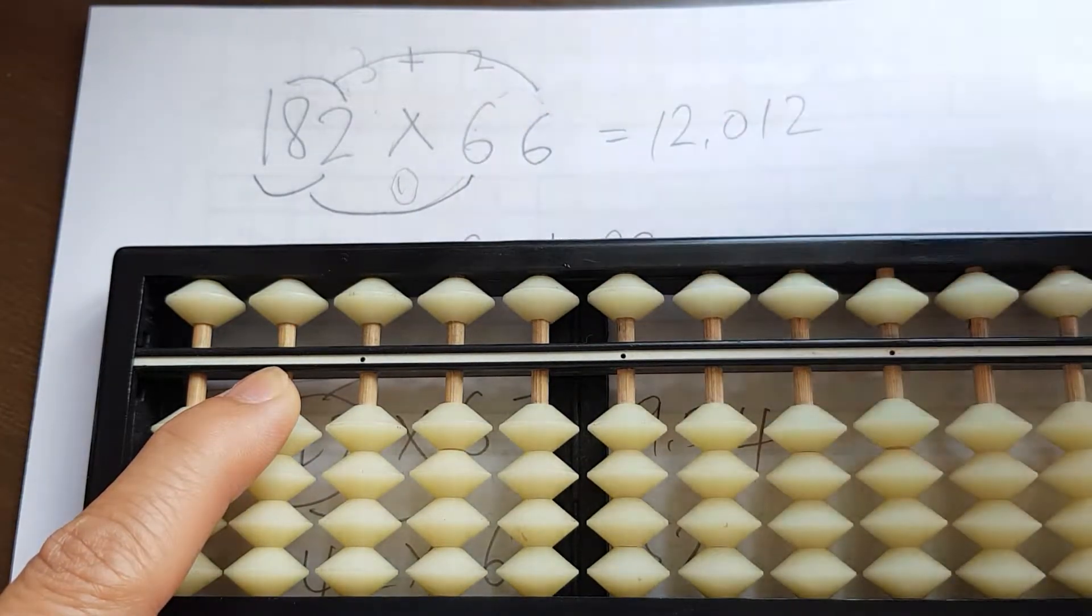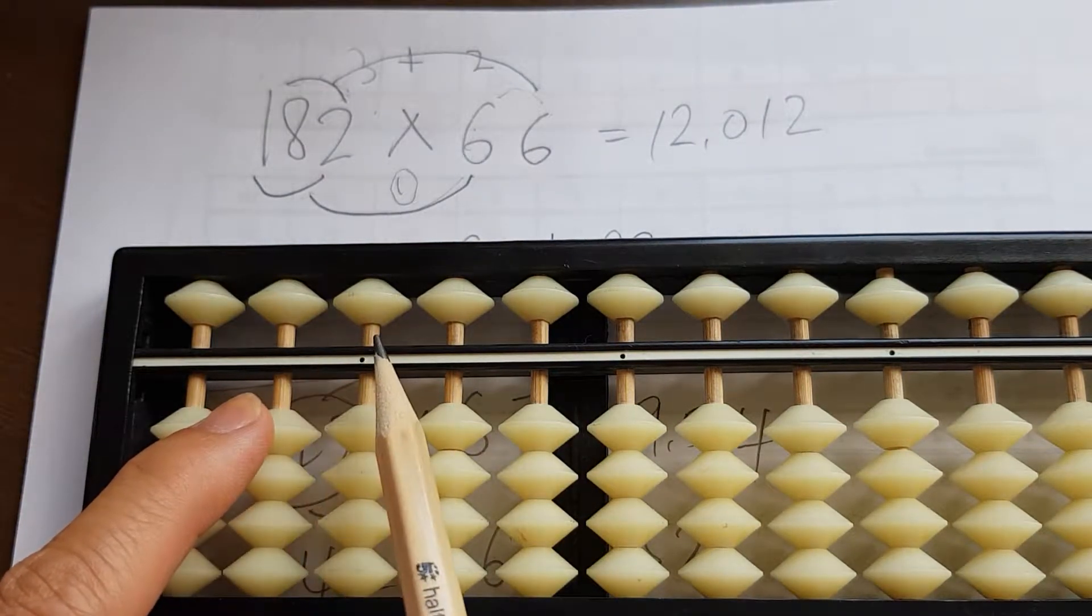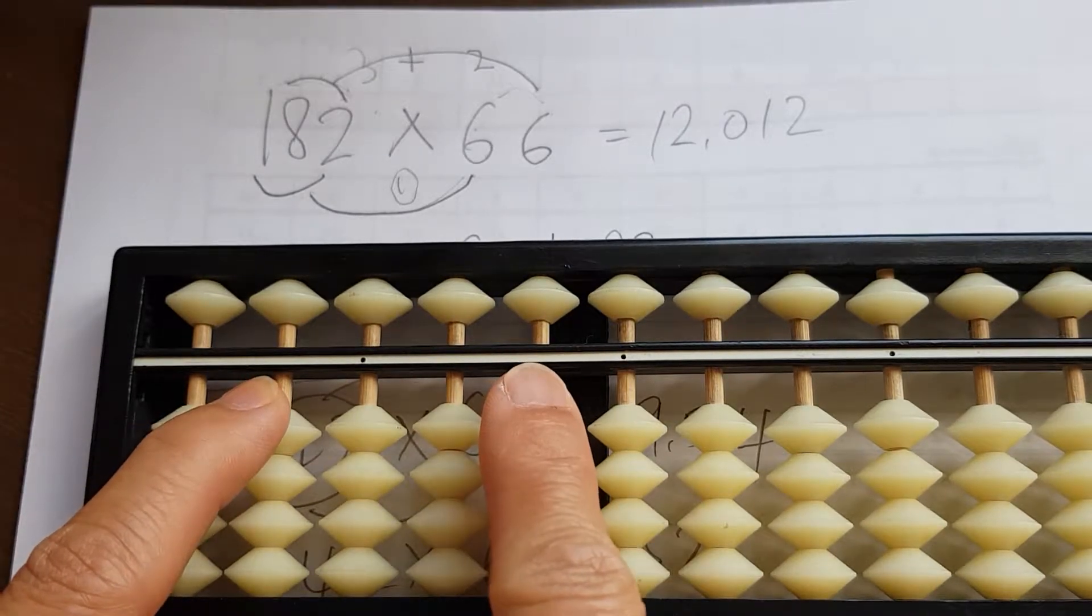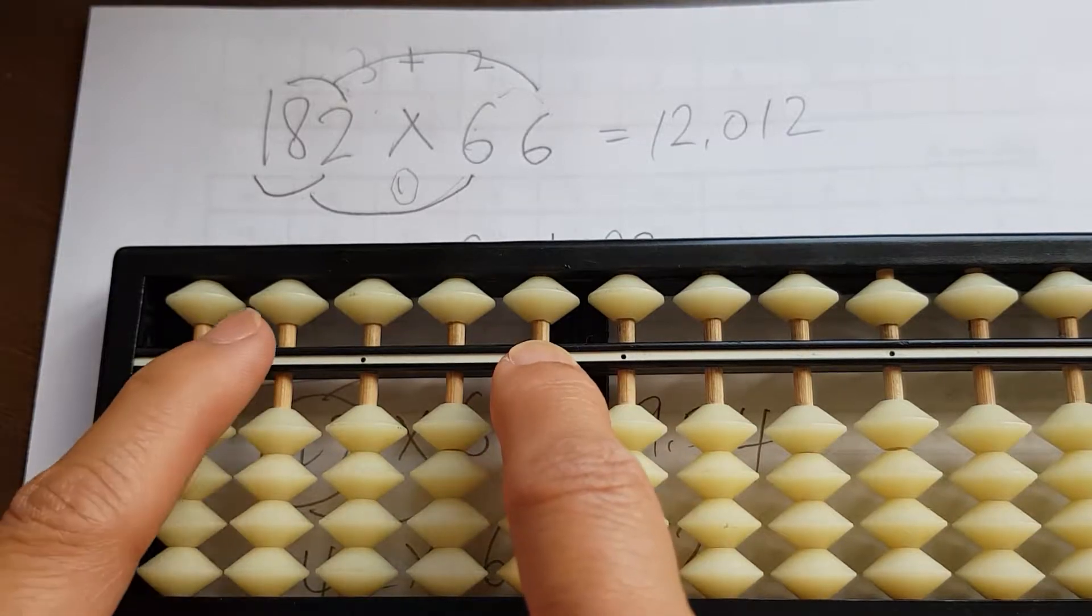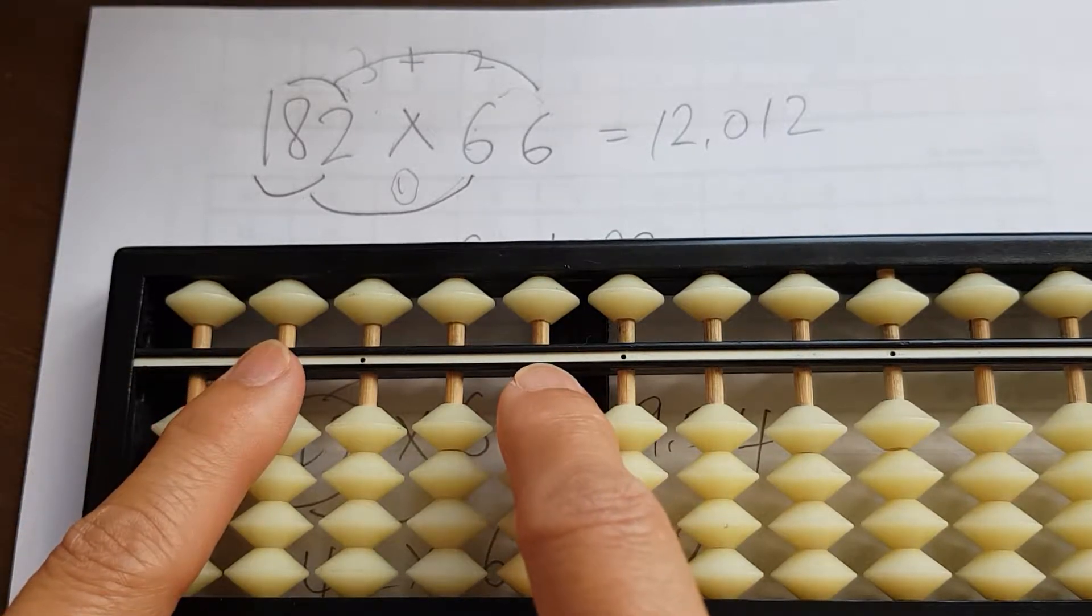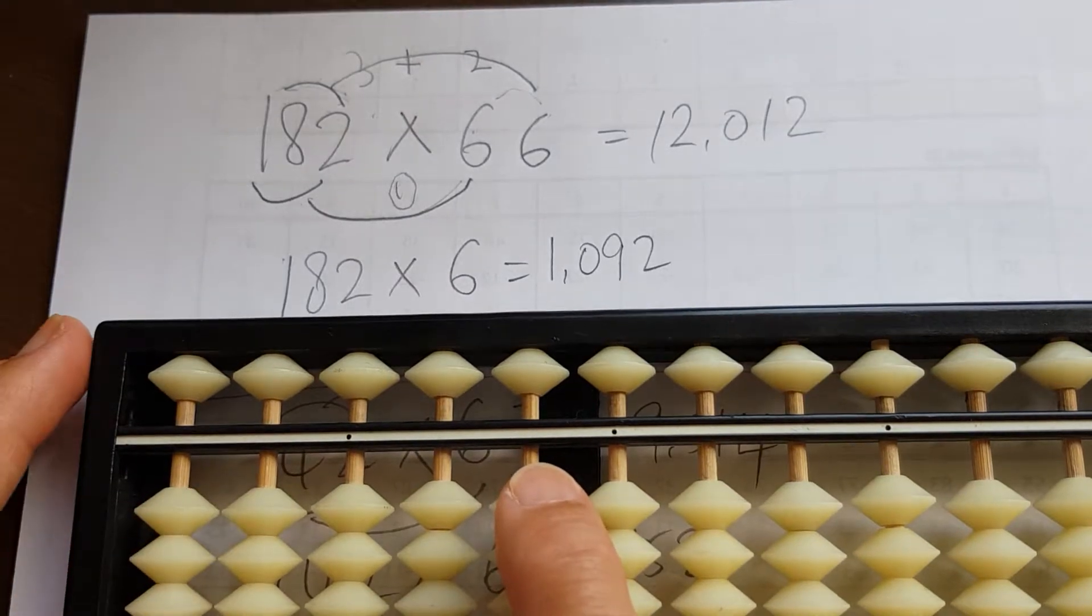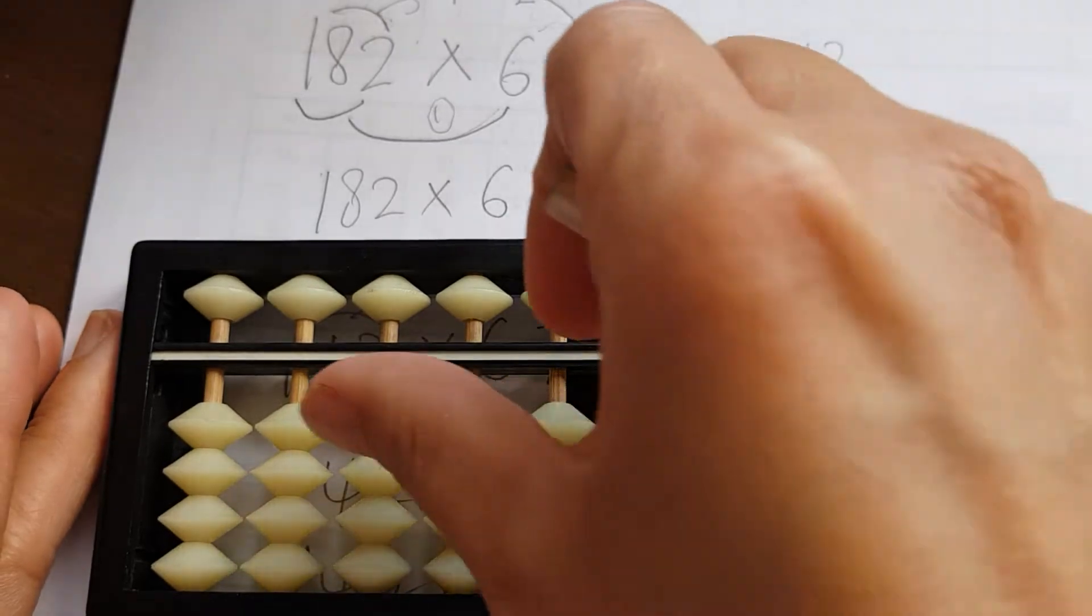The first set of multiplication, 182 times 60, is going to span across four columns on the fifth, fourth, third, and second column. The answer for that is 1092, so we're going to place 1000 here, and 90 and two.